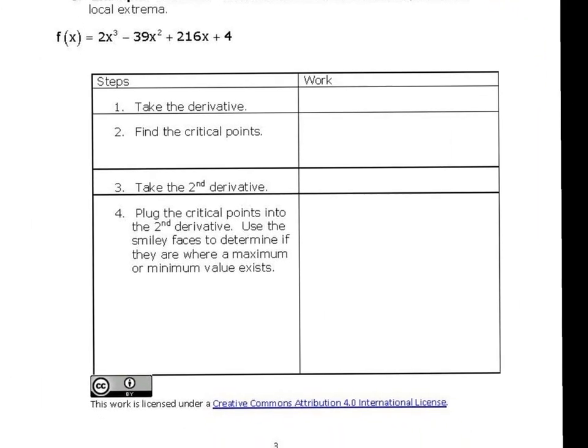Alright, so we still need to take the derivative, find the critical points, etc. So this derivative is going to be 6x squared minus 78x plus 216. Alright, if we set that equal to zero and solved it, again it's a quadratic. You should get x equals 9 and x equals 4 by using that quadratic formula in the calculator. The second derivative is going to be 12x minus 78.